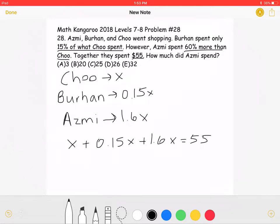Simplifying this will get that 2.75X is equal to 55.